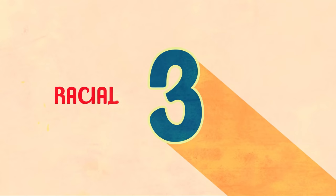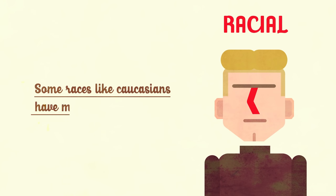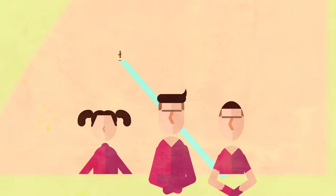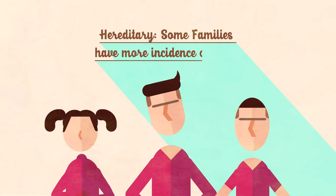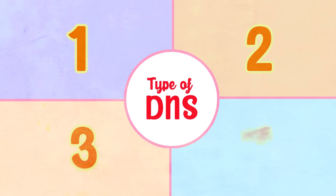Number three is racial — some races like Caucasians have a higher incidence of DNS. Number four is hereditary; some families have a higher incidence of DNS.